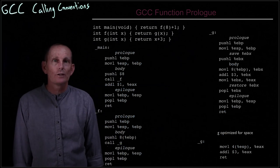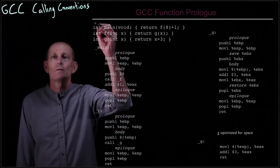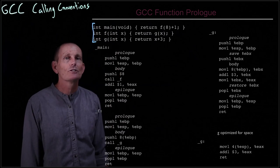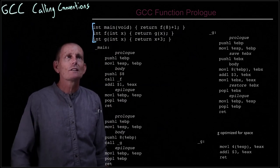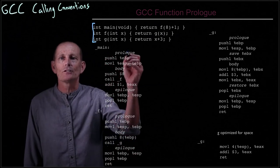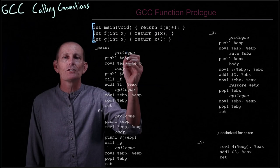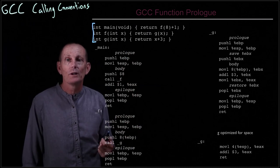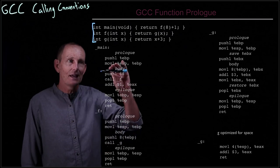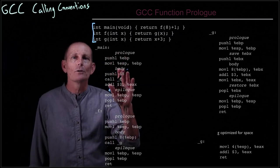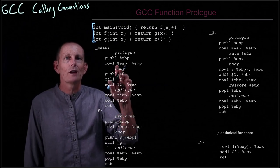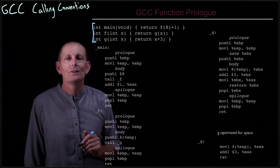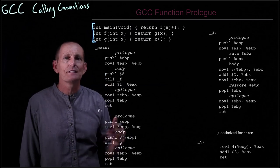Let's look at some actual code generated by some functions. We have three functions: main, f, and g. Main calls f, f calls g, and g just does some computation. In main we have a prologue: the first thing we do is push EBP, because EBP is our frame pointer and we save the current value. The body of the code returns f(8) + 1, so we push 8 and then call f. Let's look at the stack as we do this.